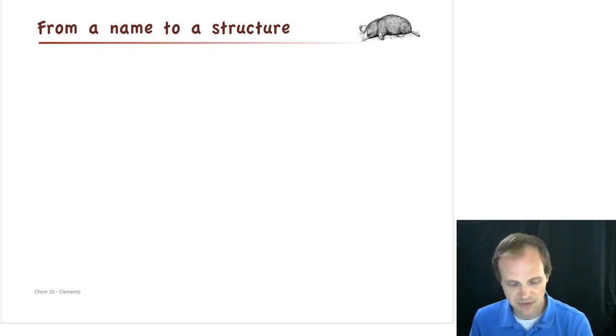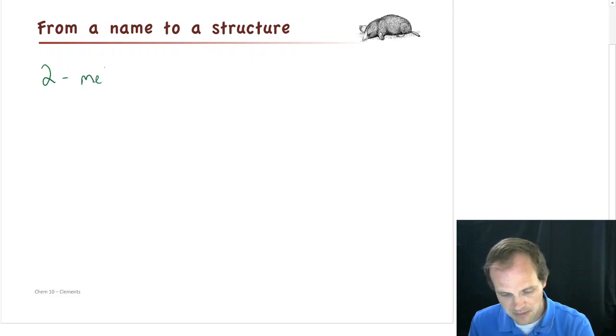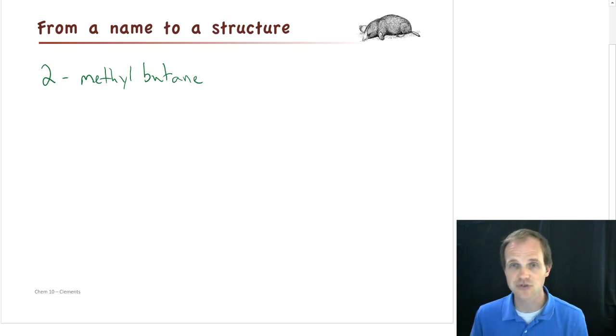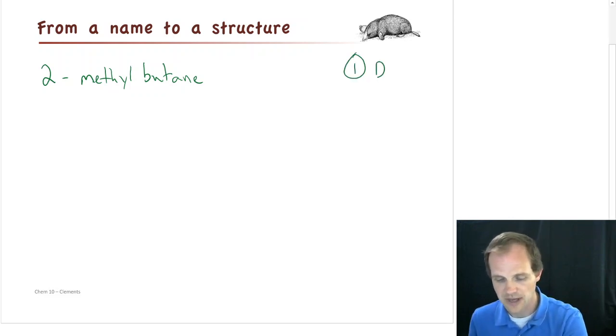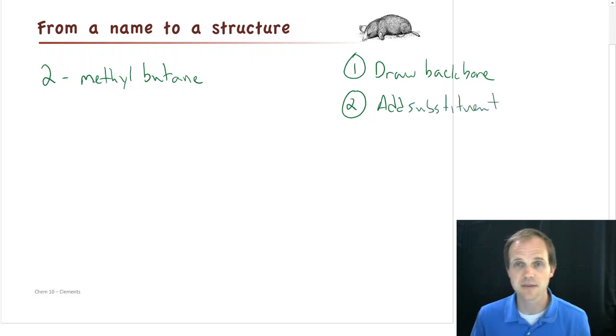Let's start with something relatively simple. We'll start with 2-methylbutane. And what we want to do is we want to draw a skeletal structure for 2-methylbutane. The easiest thing to do is to draw your backbone first, and then add substituents.